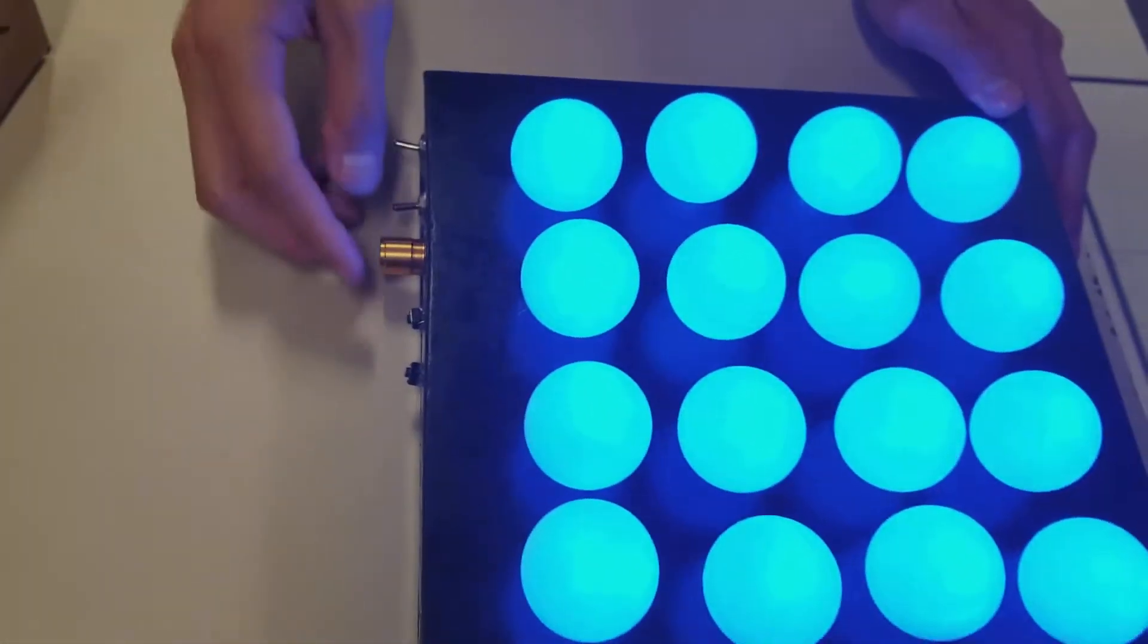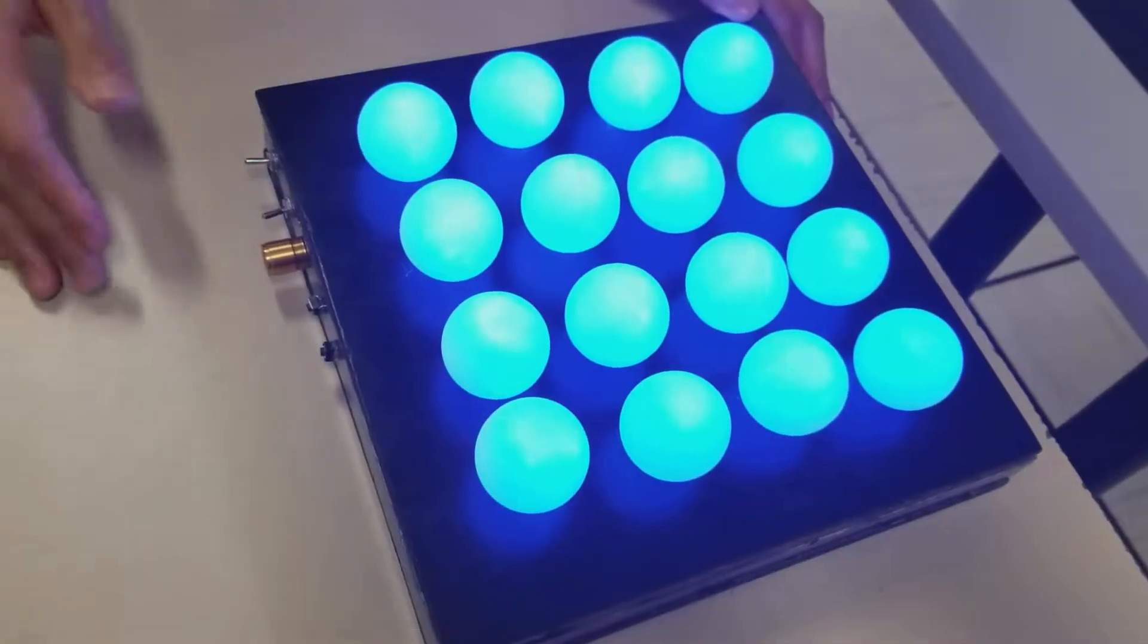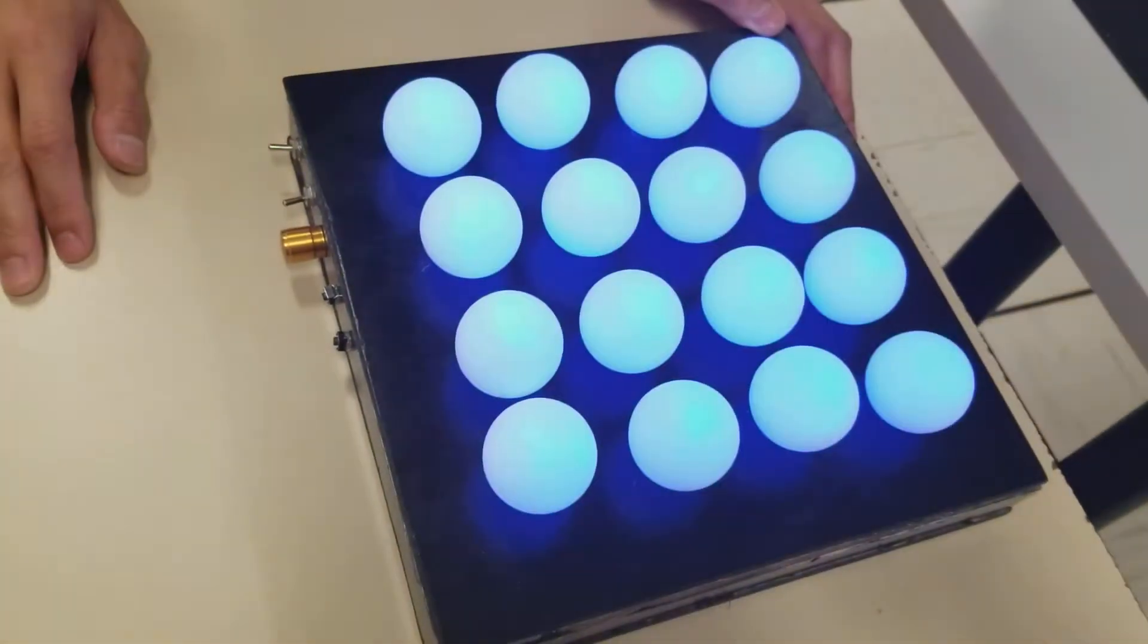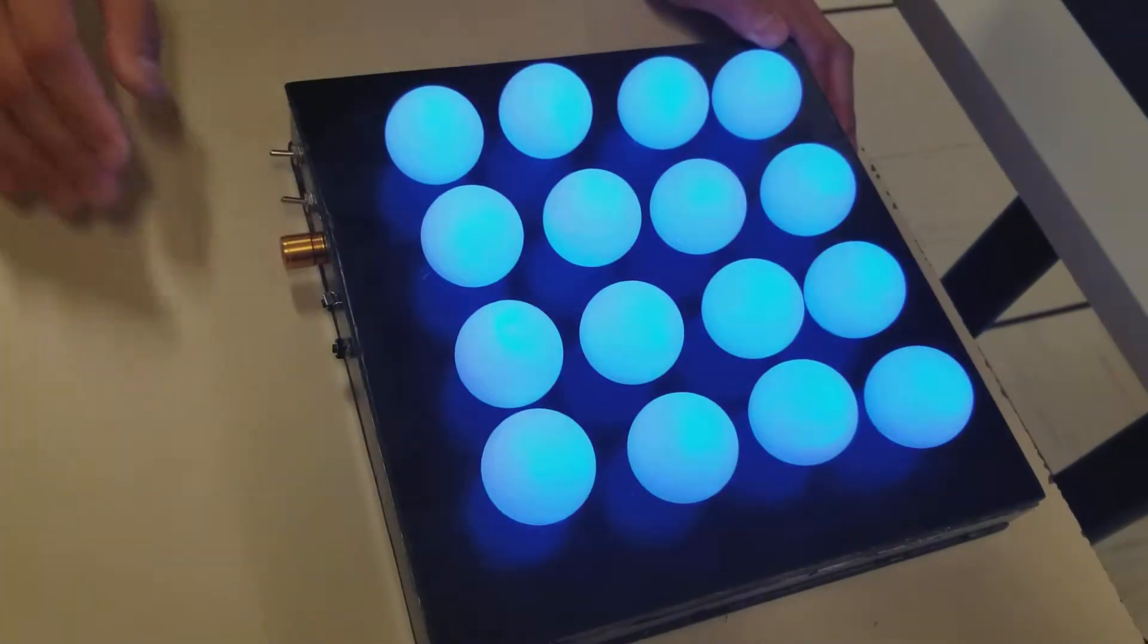And then I have the knob just to change the speed, but I'm in auto mode, so meaning that I cannot change the speed or do anything, so now I'm going to turn on the manual mode.